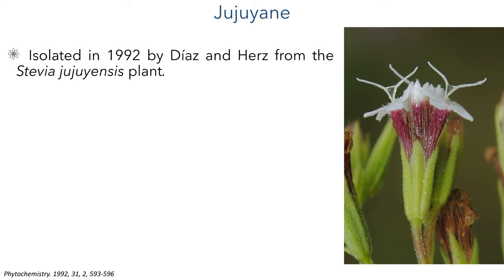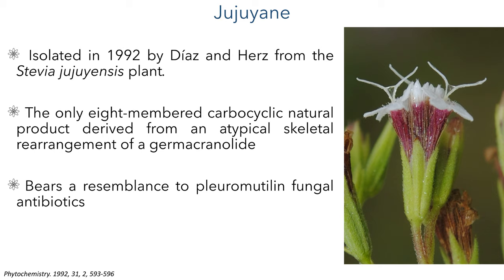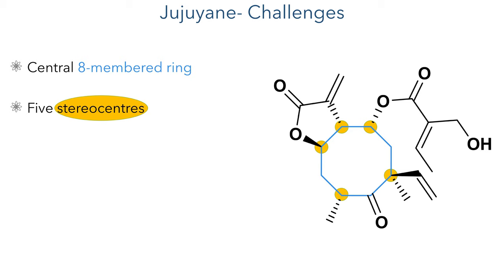Jujuyein was first isolated in 1992 by Diaz and Herz from the Stevia jujuyensis plant. It is quite an unusual product and is the only 8-membered carbocyclic natural product derived from an atypical skeletal rearrangement of a germacranolide. Structurally it bears a resemblance to the pleuromutalin fungal antibiotics, which also contain a central 8-membered ring with pendant oxygen groups. The construction of this central 8-membered ring is one of the primary challenges in synthesising Jujuyein.